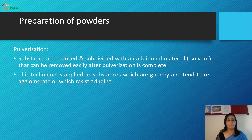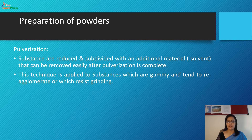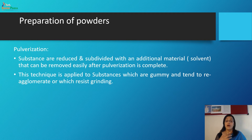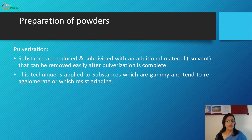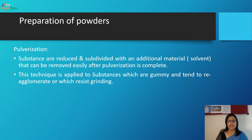Next is pulverization. On a large scale, various types of mills and pulverizers may be used to reduce the particle size. Substances are reduced and subdivided with an additional material — for example, a solvent that can be removed easily after pulverization is complete. For example, alcohol is added to camphor for reducing it to a fine powder, and later the alcohol is evaporated.